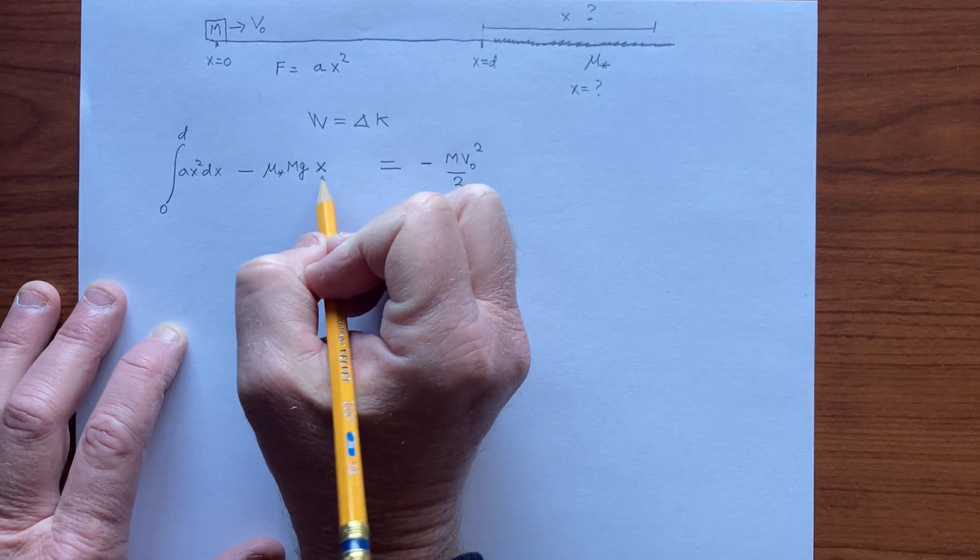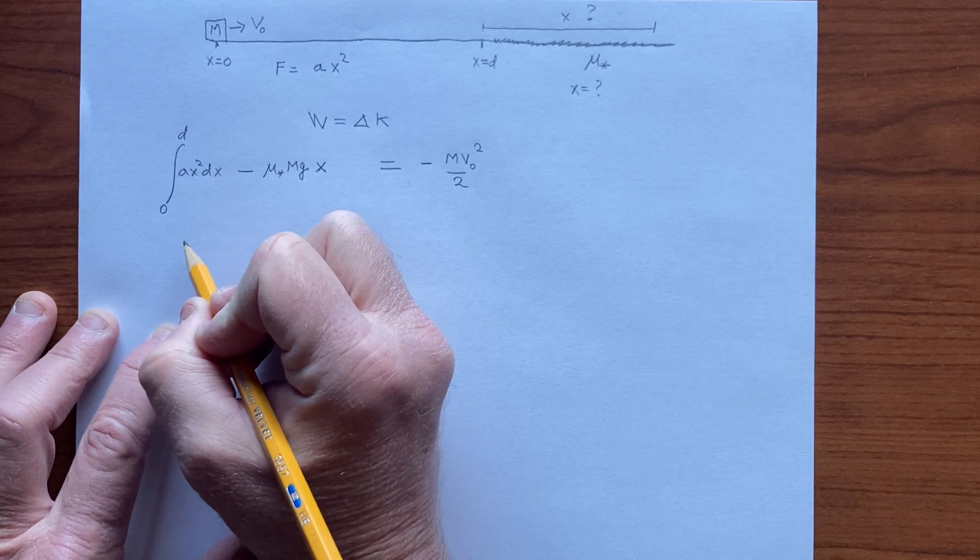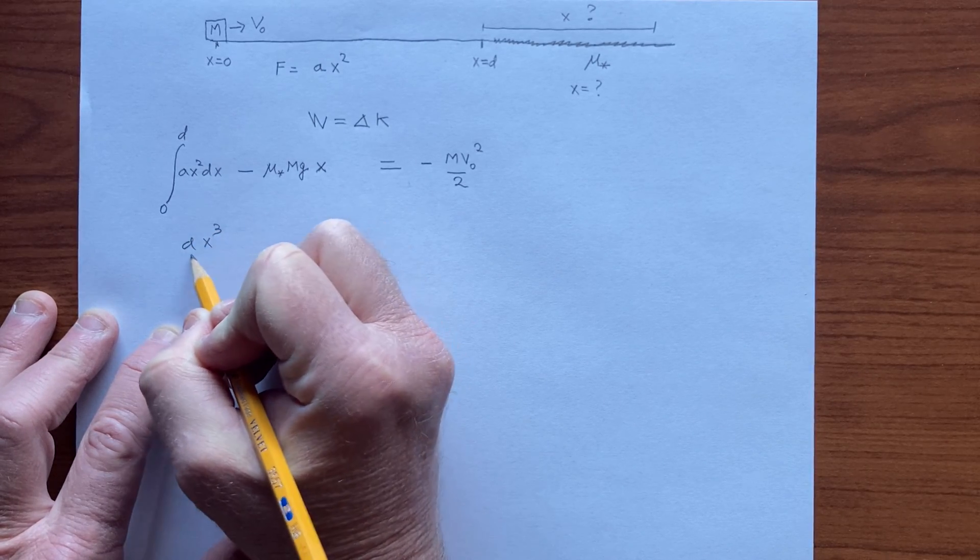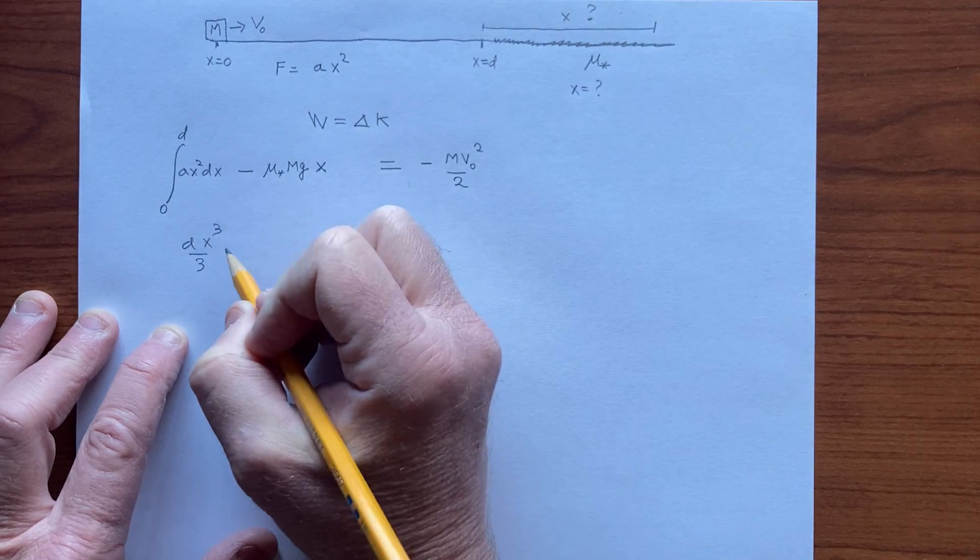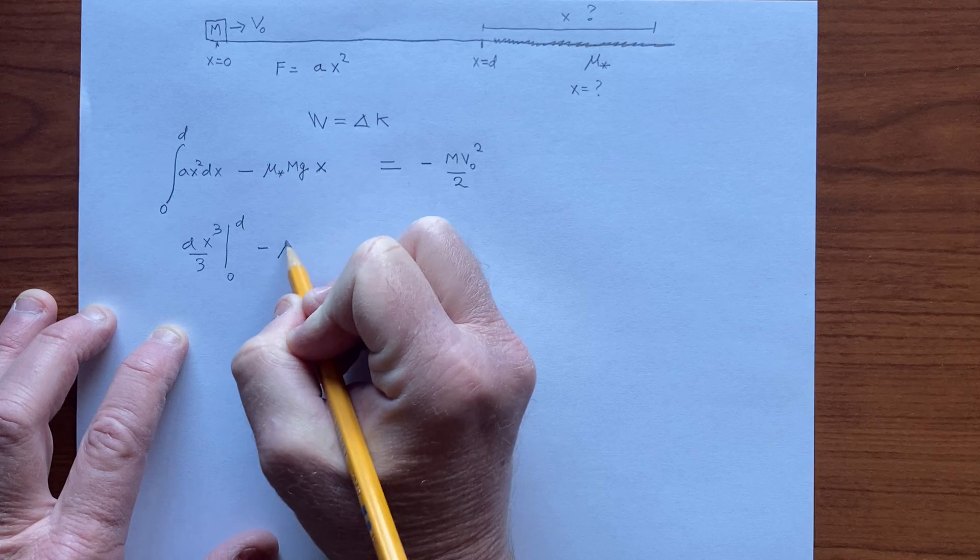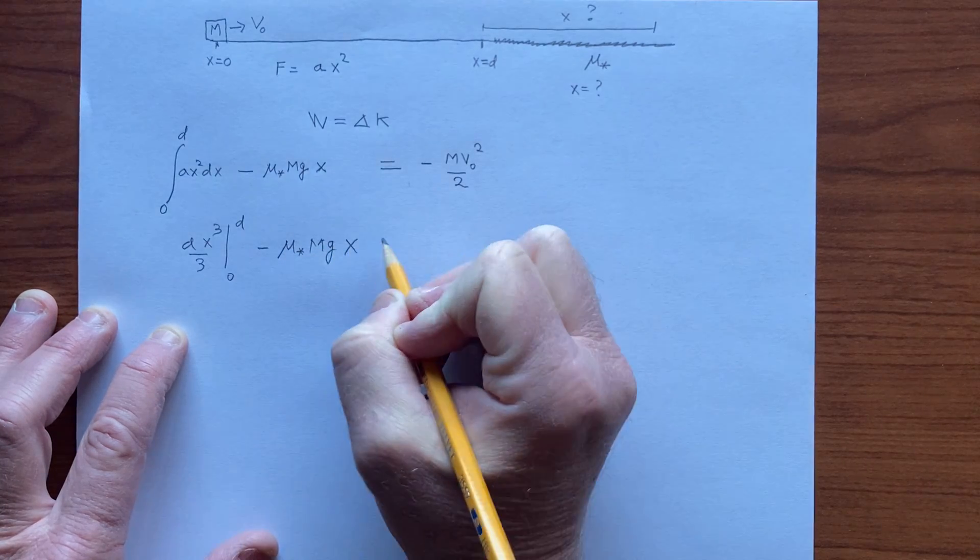Now this x is not the same as that x. This is a variable of integration along here, so we get a x cubed over 3, and we have to integrate from 0 to d.